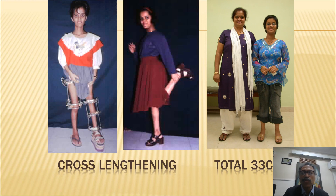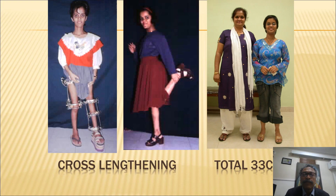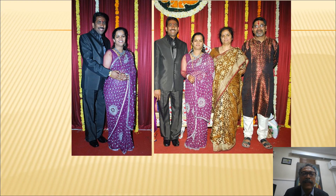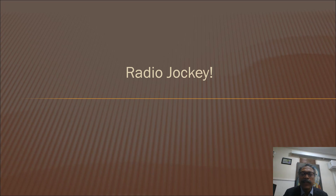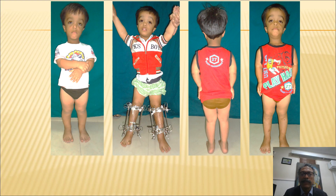This shows her good function, and by the age of 16 years she had achieved a total of 33 centimeters of length and became 4 feet 11 inches in height. Because she became a short normal, she could find happiness — she married the person of her choice and continues to work as a radio jockey. From a dwarf to a short normal with a normal lifestyle is a truly wonderful transformation.